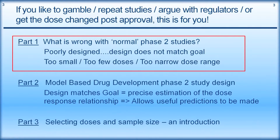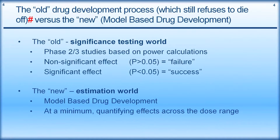If you like to gamble, repeat studies, argue with regulators, or get the dose changed post-approval, then this is for you. The main thrust of this presentation is to point out how many problems there are with Phase II study designs when they're typically done. Often I'll refer to the old way versus the new way - model-based drug development. The old way was very much designing and analyzing studies around the idea of significance testing: a non-significant effect is a failure, a significant effect with P less than 0.05 is a success.